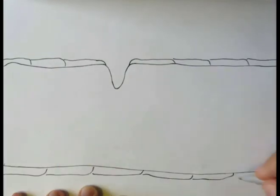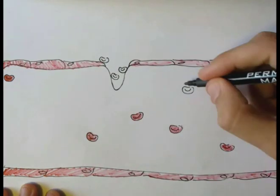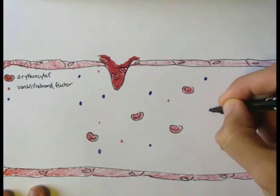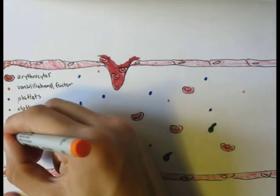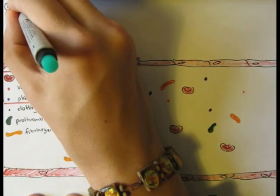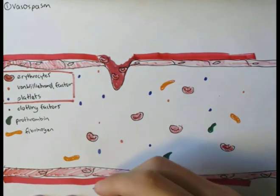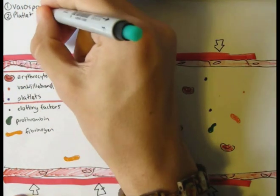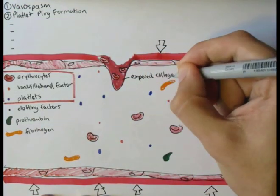Going back, here again we have the blood vessels containing the erythrocytes, von Willebrand factor, platelets also known as thrombocytes, and also there are clotting factors, prothrombin, and fibrinogen which I will discuss later on. Right now we will look into the first three. We talked about vasospasm when the smooth muscles around the endothelial cells contract. Next, what happens to stop the bleeding temporarily is platelets form a plug around the injured area, known as platelet plug formation. This process can be divided into four parts.